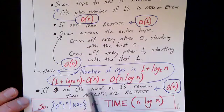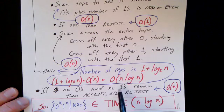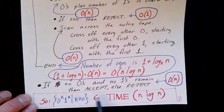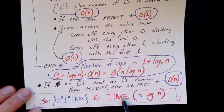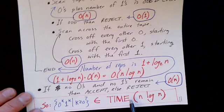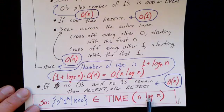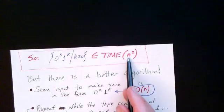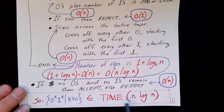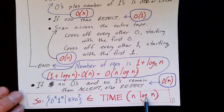Finally, the last step scans for remaining zeros and ones, confirms nothing remains, and performs the accept or reject — that is just an order N operation. So we've found an algorithm that runs in order N log N. We've now shown that this problem is a member of a more restrictive class — specifically the time complexity class N log N. Before, we had an algorithm that solved it in order N² time; now we've found a better algorithm, allowing us to show that it is in a tighter, more restrictive complexity class.